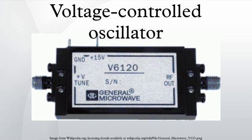VCOs can be generally categorized into two groups based on the type of waveform produced: harmonic oscillators and relaxation oscillators. Linear or harmonic oscillators generate a sinusoidal waveform. Harmonic oscillators in electronics usually consist of a resonator with an amplifier that replaces the resonator losses and isolates the resonator from the output. Some examples of harmonic oscillators are LC tank oscillators and crystal oscillators.